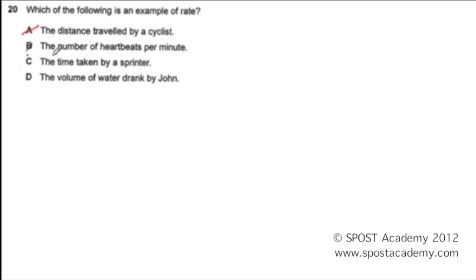B: the number of heartbeats per minute. There are actually two quantities here — the number of heartbeats and the time. So B is our answer.